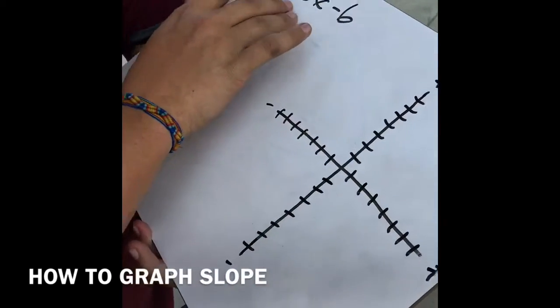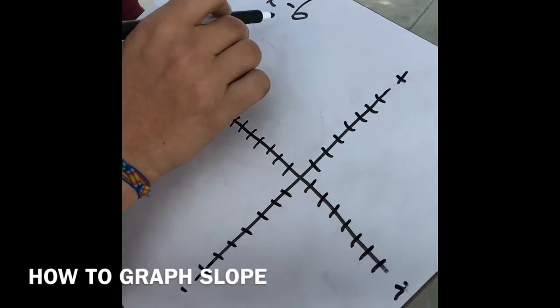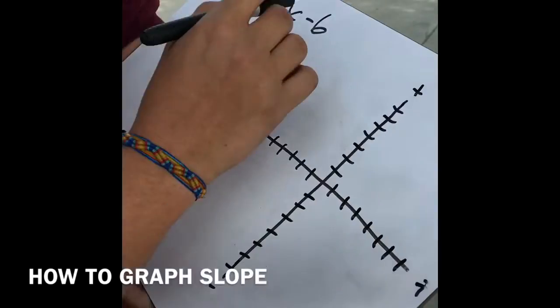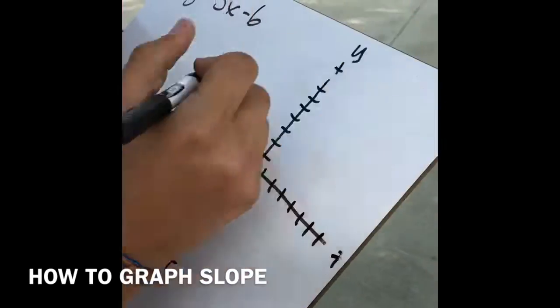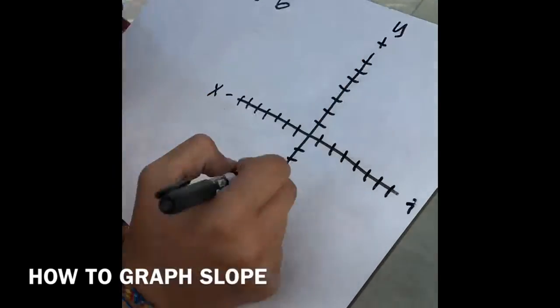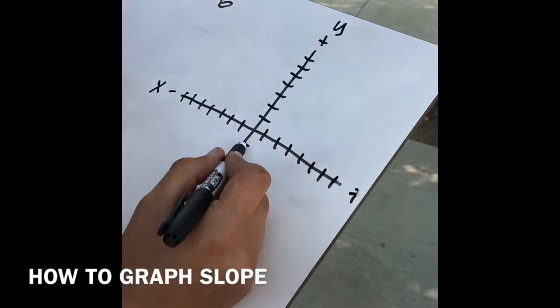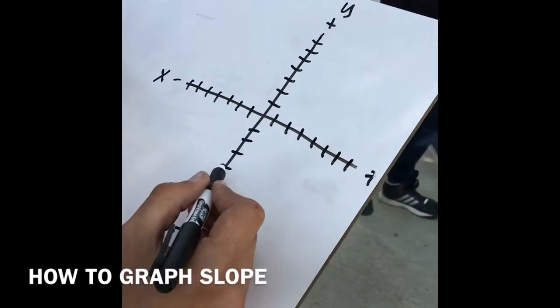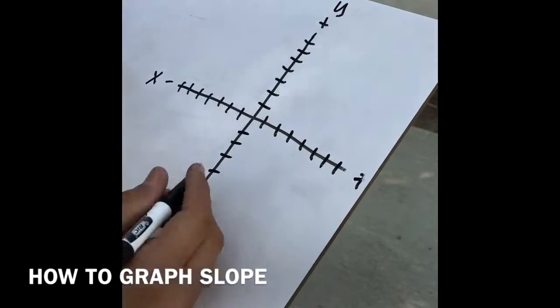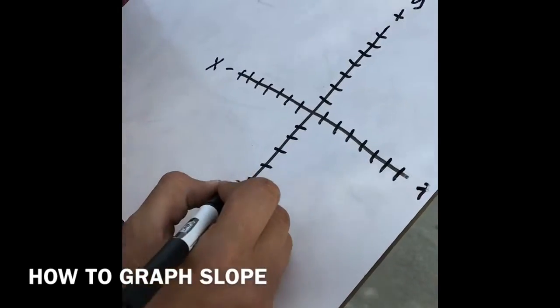So as you can see, it's negative 3x plus 6. So this is the y-intercept. So it's going to intercept on the y-axis. So here's the y-axis. So we need to go to negative 6. We have 1, 2, 3, 4, 5, 6. And as you can see, it's negative. So this is the y-intercept.